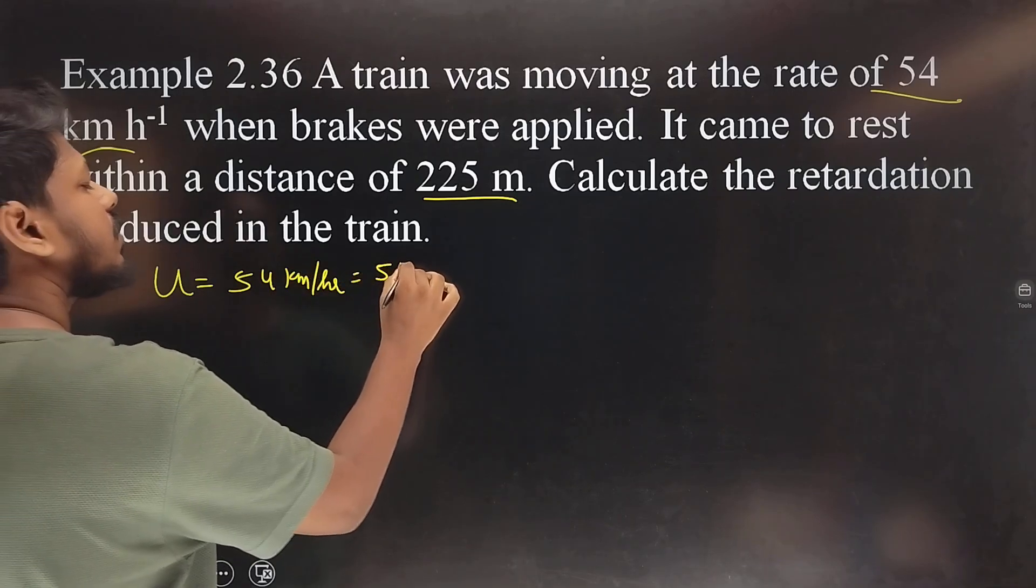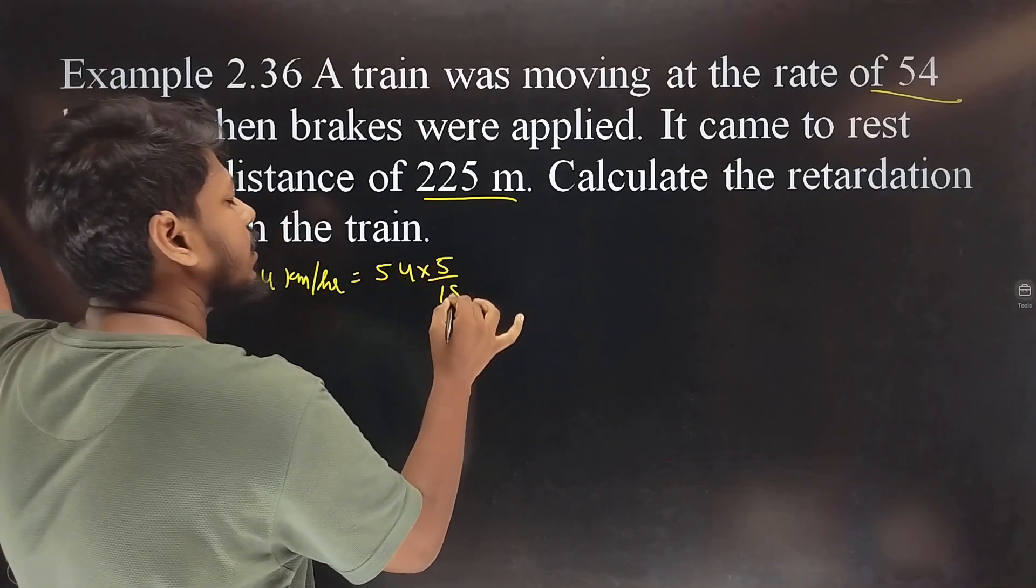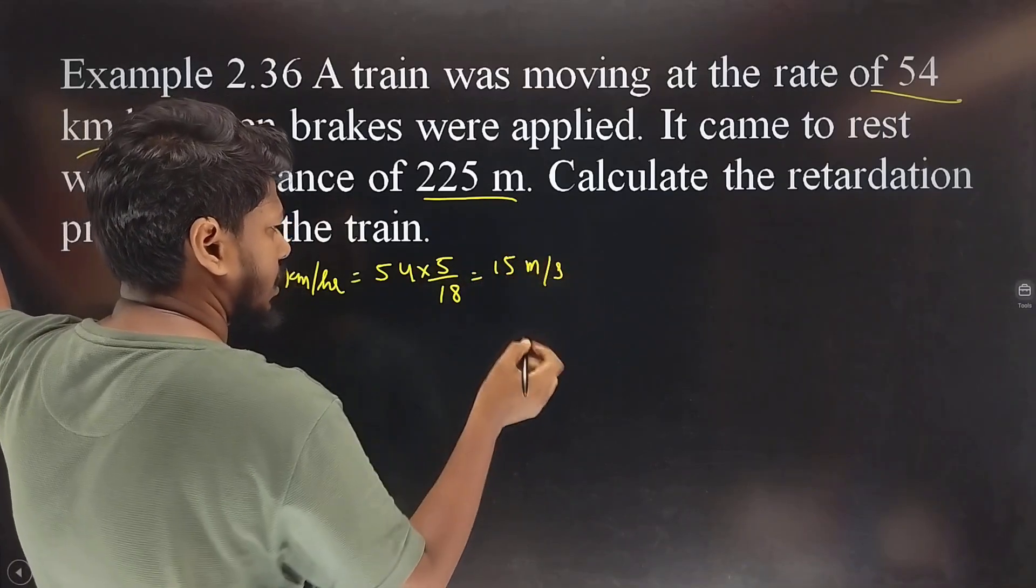Let's say initial velocity of the train is 54 km per hour. We need to convert this: 54 times 5 by 18, so 3 times 5 is 15 meters per second.